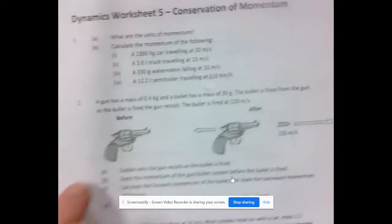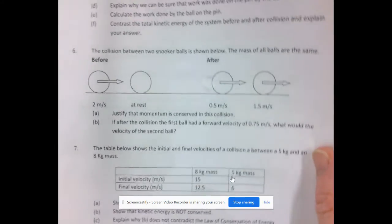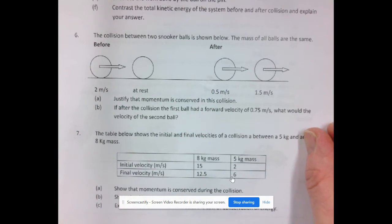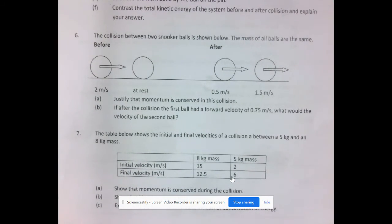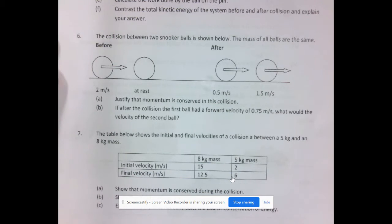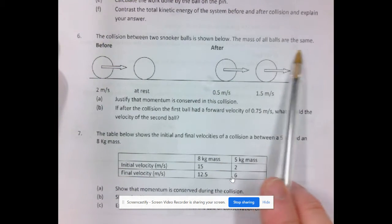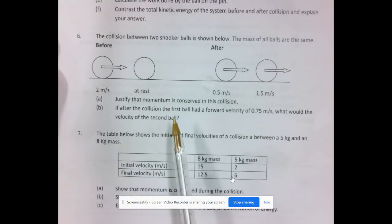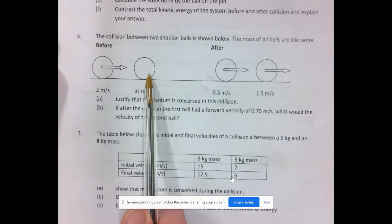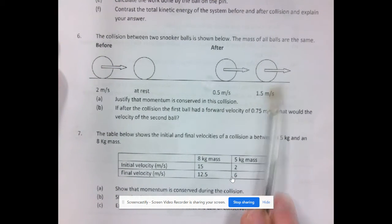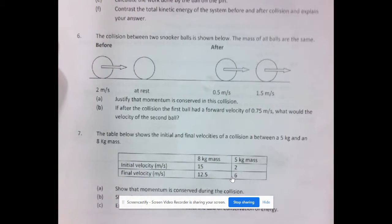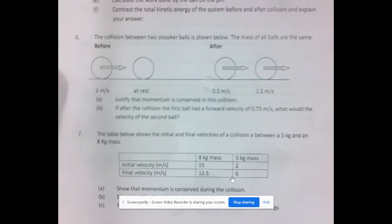Welcome back. This is now the conclusion of Dynamics Worksheet number 5, Conservation Momentum, and we're doing questions 6 and 7 in Full Work Solution. Question 6 is giving us a diagram where we have two collisions of two snooker balls shown, and both of the masses of the balls before are the same. Using the diagrams, we have to justify momentum is conserved in the collision.